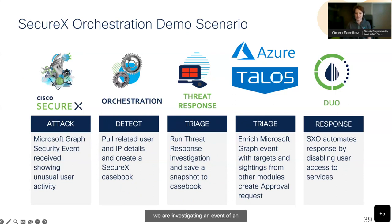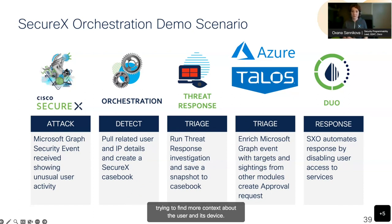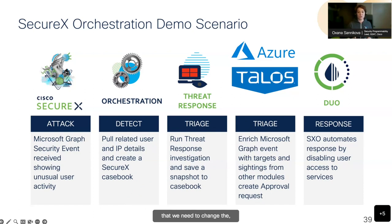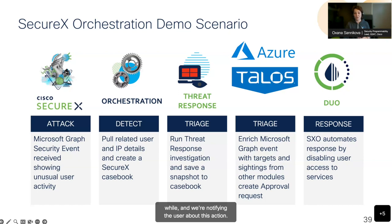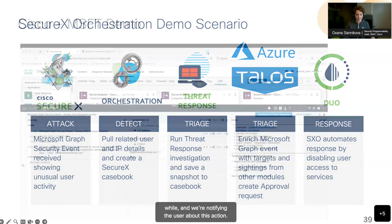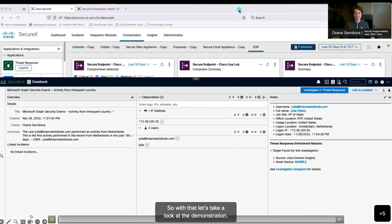In this specific example, we're investigating an event of unusual user activity from an unusual location. We're doing additional enrichment, trying to find more context about the user and their device. After that, if we make a decision that we need to change the trust level for that user, while investigating further, we are disabling the user in Azure Active Directory and notifying the user about this action. Let's take a look at the demonstration.